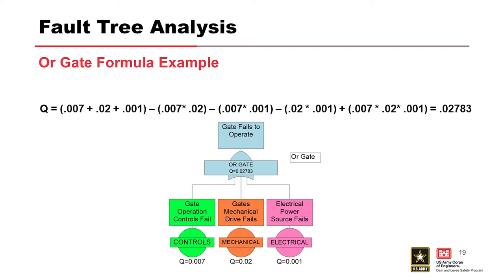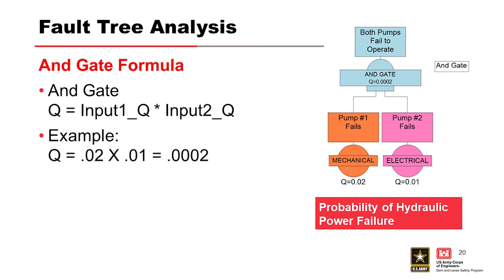The other type of most common gate that we use is the AND gate. AND gates are used for redundancy. An example is if there are two pumps in a hydraulic system and it takes both pumps to fail to operate.